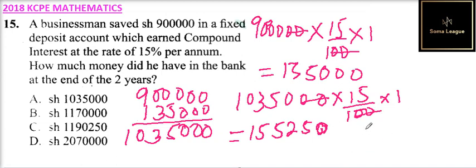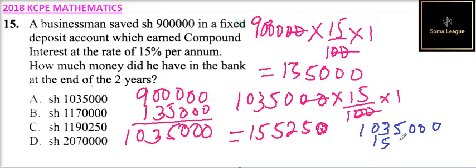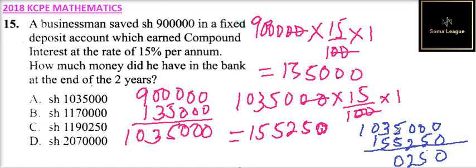To get the total, you add the amount at the start of the second year — 1,035,000 — plus the interest earned in the second year, which is 155,250. When you add these two, you get 1,190,250. So that is the amount you have in the bank at the end of the second year.